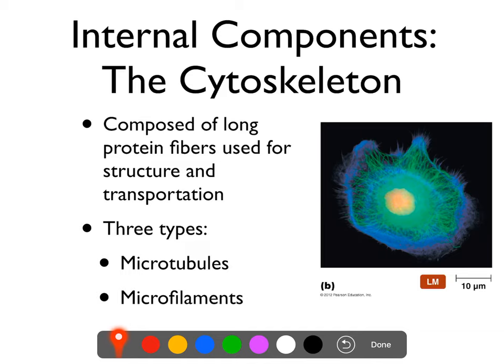This is particularly important in cells that don't have a cell wall. For cells that do have a cell wall, it's still important, but it's not what gives structure and shape to the cell. But for cells like protozoa and animal cells, this is what gives structure and shape, just the same way that your skeleton gives structure and shape to your body.